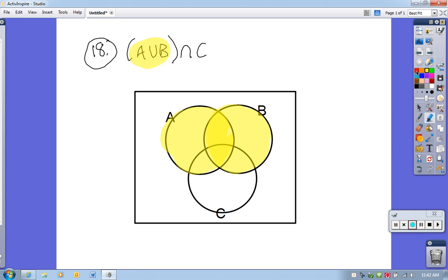And what I want to know is where does that intersect with C. So C is here. So the intersection of these two pieces, let's see, the intersection of these two pieces is where there's overlap.